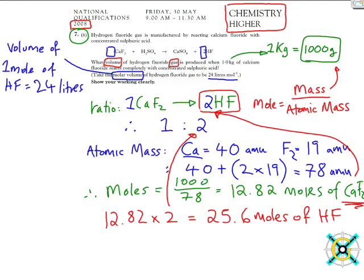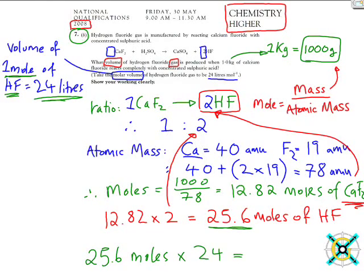And we know from what they've told us, one mole of hydrogen fluoride gives 24 litres. Let's do that again. We know that 1 mole of hydrogen fluoride equals 24 litres. So if we have 25.6 moles, we've got to times 25.6 moles by 24 litres. This will give us the volume of hydrogen fluoride gas produced, which is 650 litres.